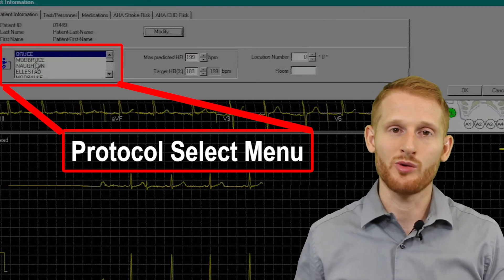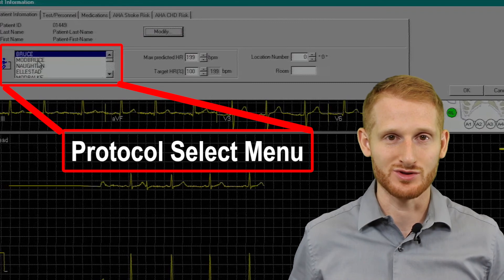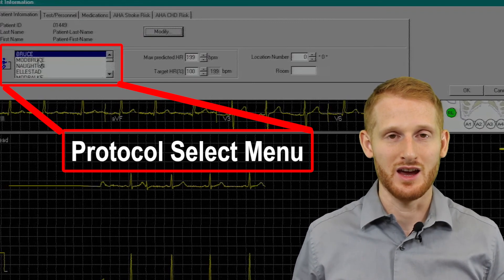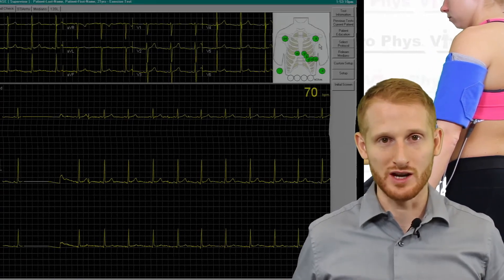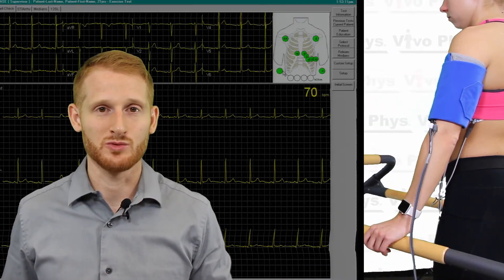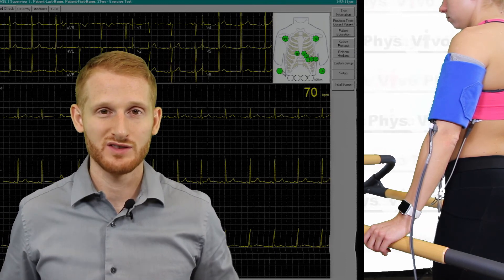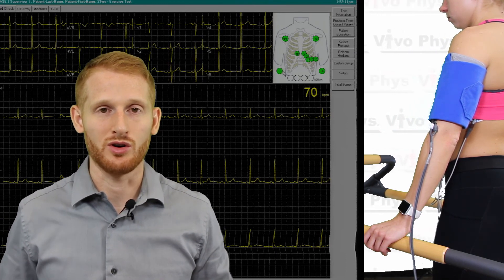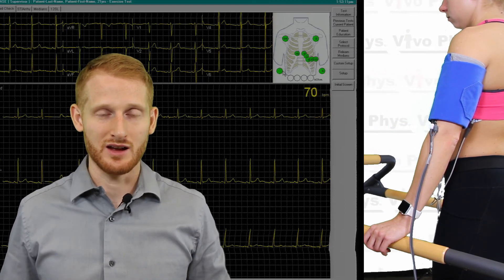You're going to select a protocol within that list. We're going to use the Bruce protocol because it's the most commonly used treadmill test in the United States. If you just have that highlighted, then you click OK, and that dialog box is going to go away. Underneath where that dialog box was, there's a little diagram of the torso of an individual with circles where all the electrodes would go with the names of those electrodes.